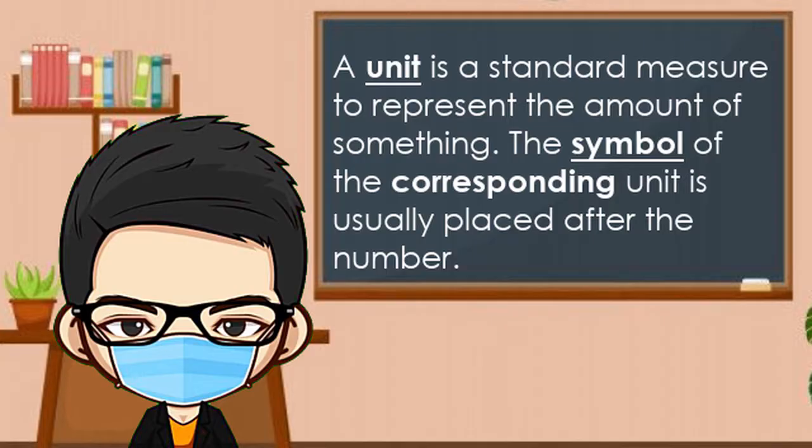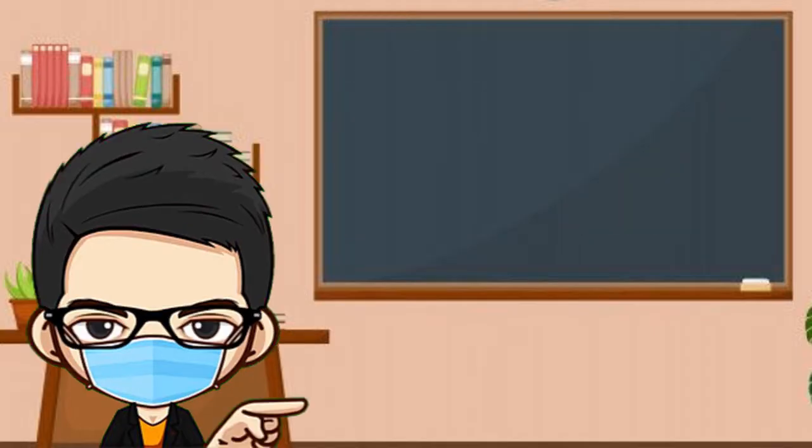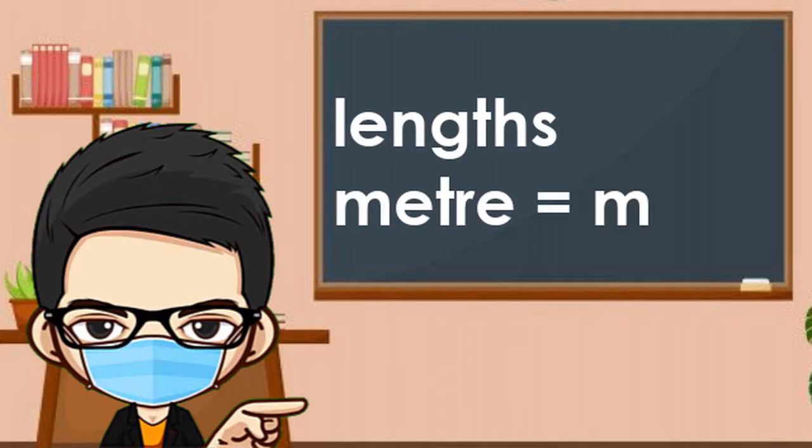A unit is a standard measure to represent the amount of something. The symbol of the corresponding unit is usually placed after the number. For example, lengths are measured using a unit called meter, with the symbol M.